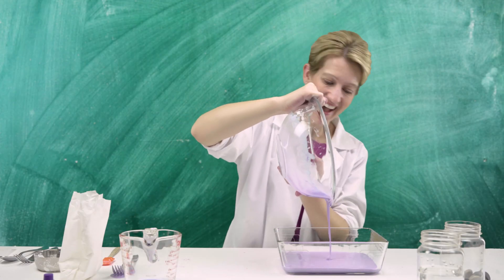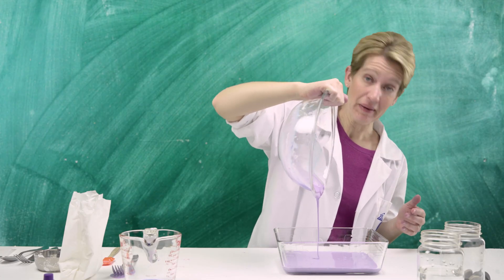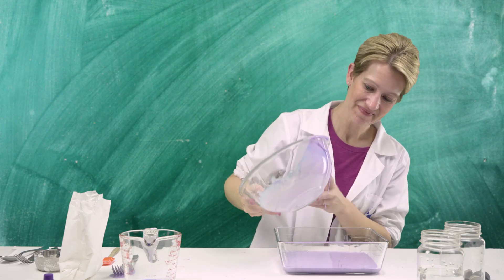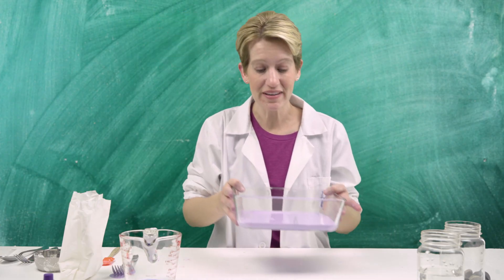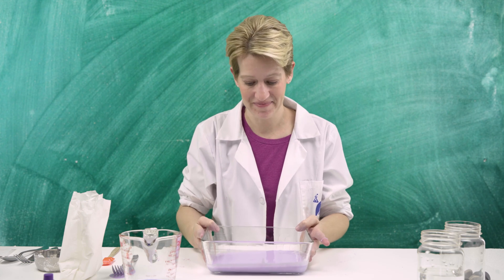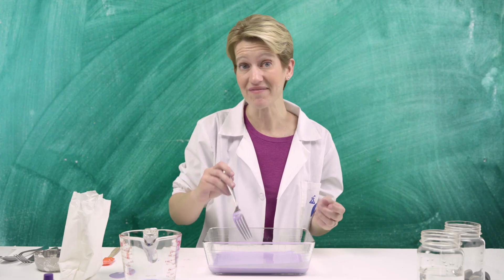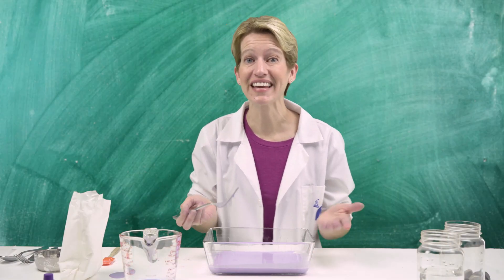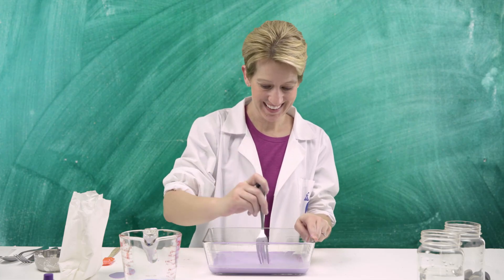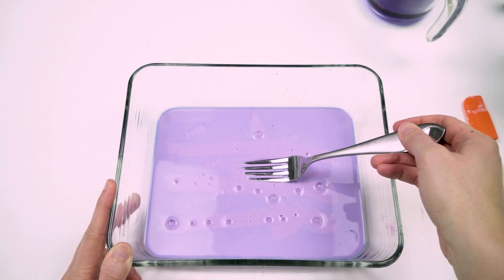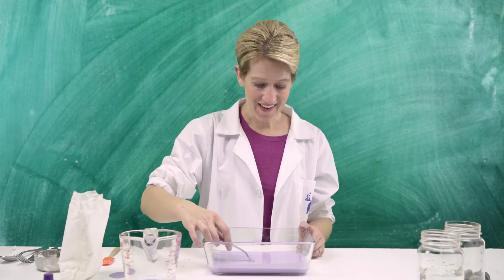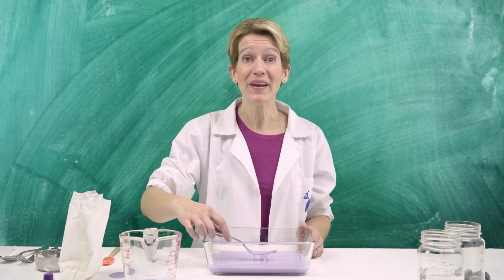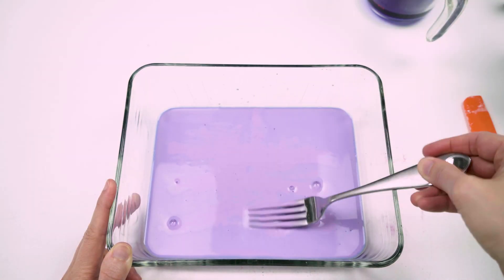It acts just like a liquid, doesn't it? You can pour it just like water or mud or paint — it just pours right in there. And it's really messy. So now we've moved our oobleck to this container. Let's take our fork and see if we can poke it. Do you see how the fork goes right through the oobleck? But now watch — it's a solid again.